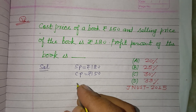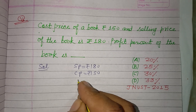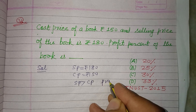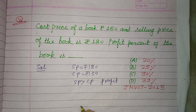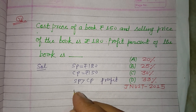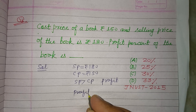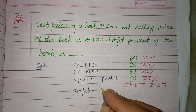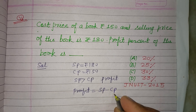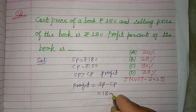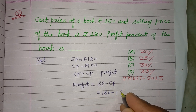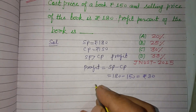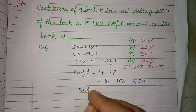Here, SP is greater than CP, therefore profit took place. Profit equals selling price minus cost price, which is 180 minus 150, giving us rupees 30. So the profit is 30 rupees.